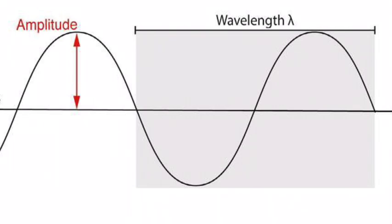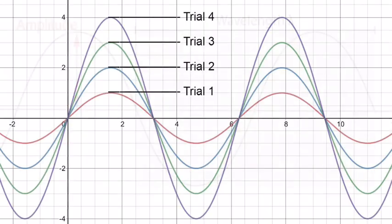Module 14.5 shows us that the amplitude of a sound wave is proportional to how loud a sound is. If you look at trial one, you'll see it has the lowest amplitude of any trial, and it also had the quietest sound. In trial two, the amplitude is a little bigger and the sound was a little louder. We see this trend continue all the way up to trial four, which had the loudest sound and the largest amplitude.